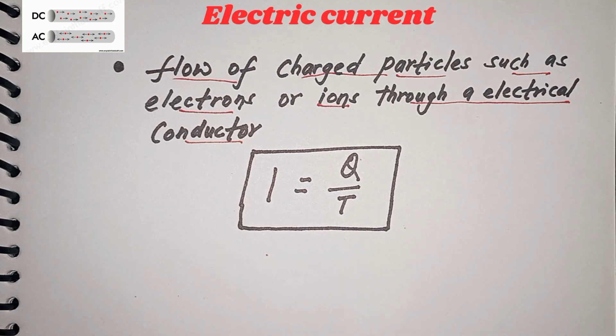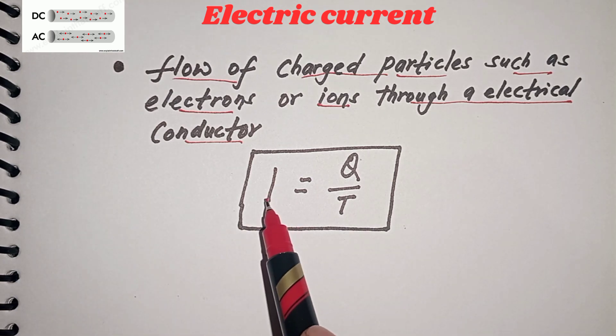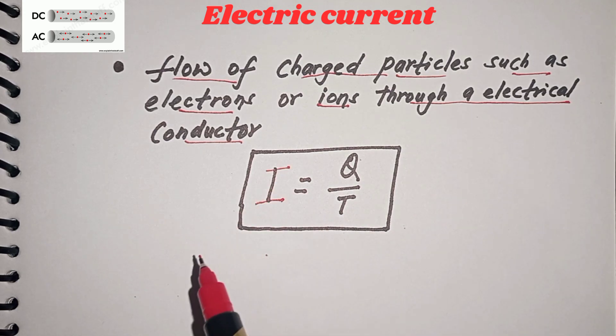Electric current can be defined as a net flow of electric charge through a surface. The electric current is denoted by I, and the formula